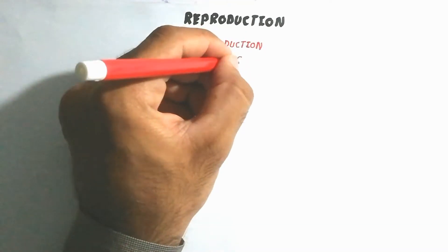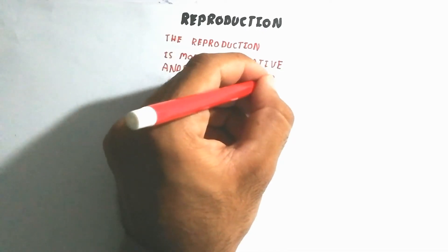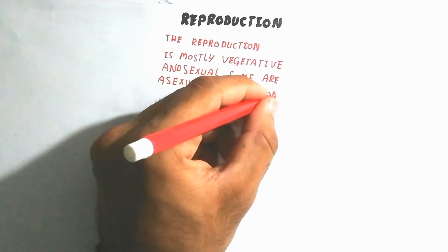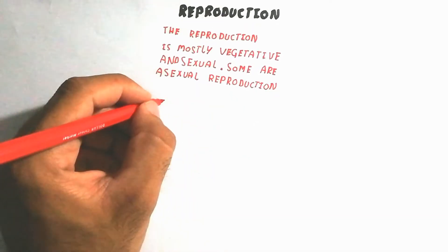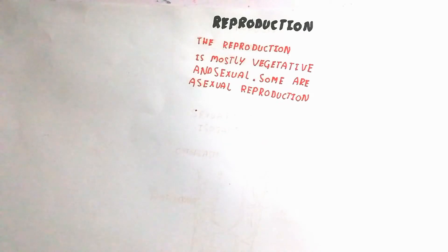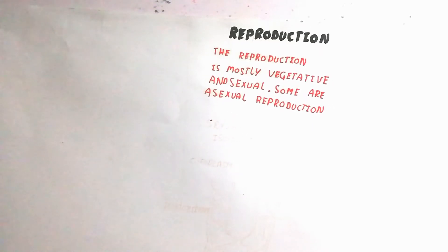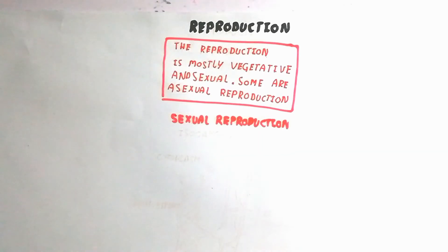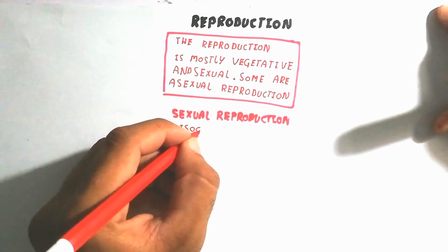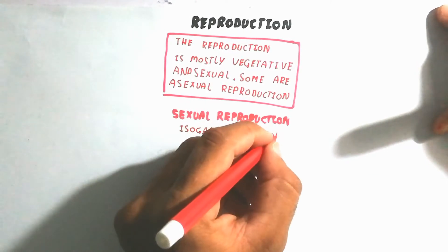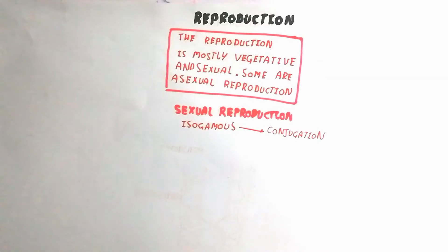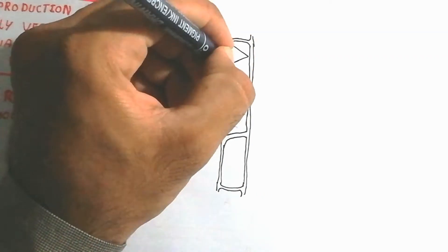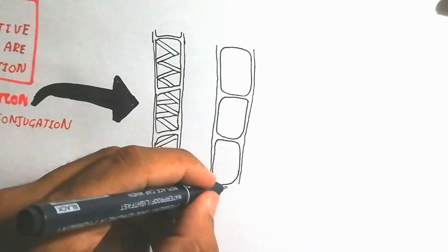Reproduction is mostly vegetative and sexual; some asexual reproduction is also studied. Sexual reproduction occurs by two types: scalariform conjugation and lateral conjugation. The process is isogamous, meaning both gametes are the same — same size, same structure, and same shape.